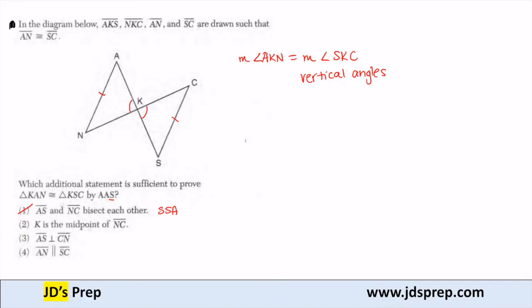Same thing with option 2. If I'm going to use the fact that K is the midpoint, that's going to give me another side congruence, which would prove it using SSA. But again, we want another angle congruence.